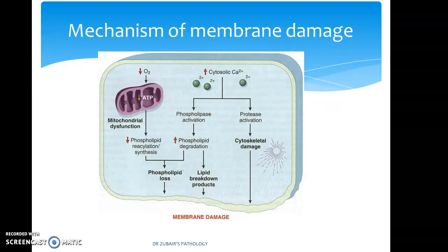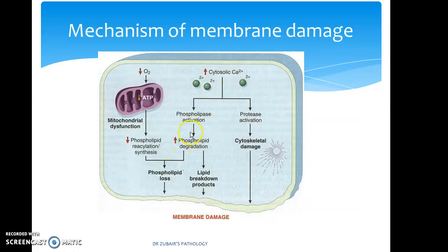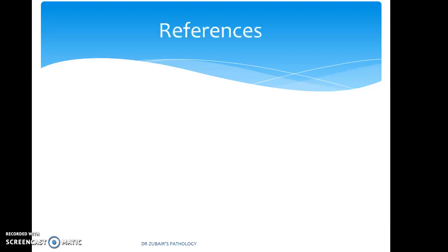The fourth and fifth mechanisms of membrane damage are a summary of what we have already discussed. When the mitochondria fails in its function, there is phospholipid loss. And when there is an increase in cytosolic calcium, that again leads to phospholipid degradation and lipid breakdown, which can again cause protease activation with cytoskeletal damage, ultimately causing membrane damage. With this, we have covered the mechanism of cellular injury.